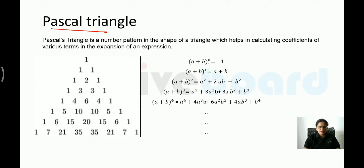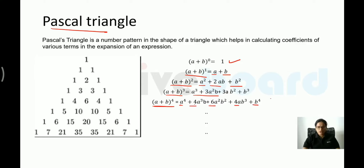(a + b)^0 = 1; (a + b)^1 = a + b; (a + b)^2 = a² + 2ab + b². For (a + b)^4 the coefficients are 1, 4, 6, 4, 1. These coefficients are given by Pascal's triangle. Each row is formed by copying the 1s on the ends and adding adjacent values: 1, then 1+1=2, giving 1,2,1; then 1,3,3,1; then 1,4,6,4,1.